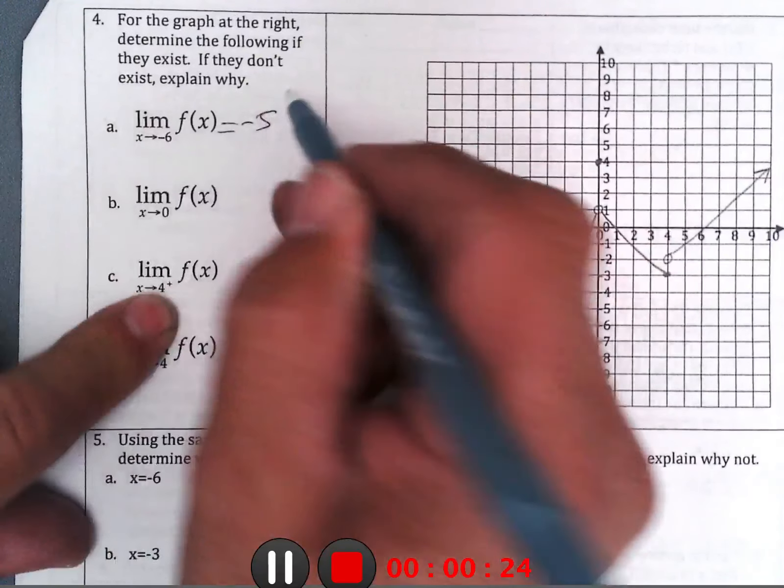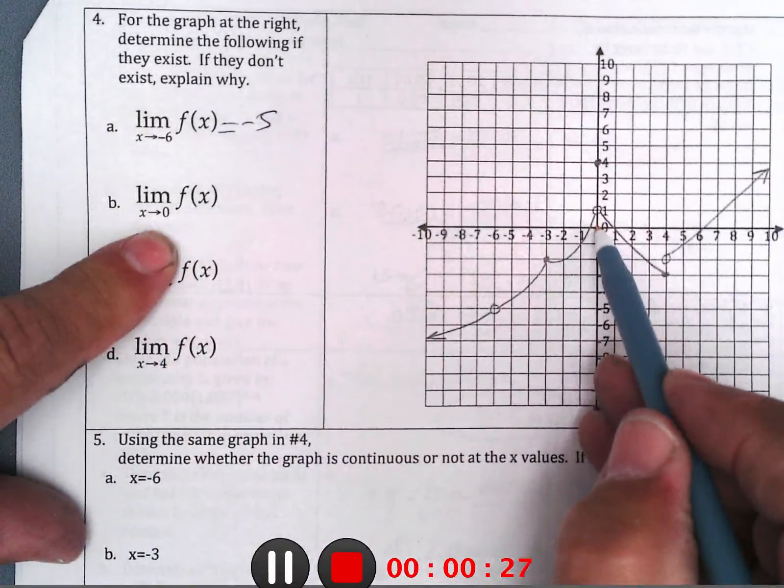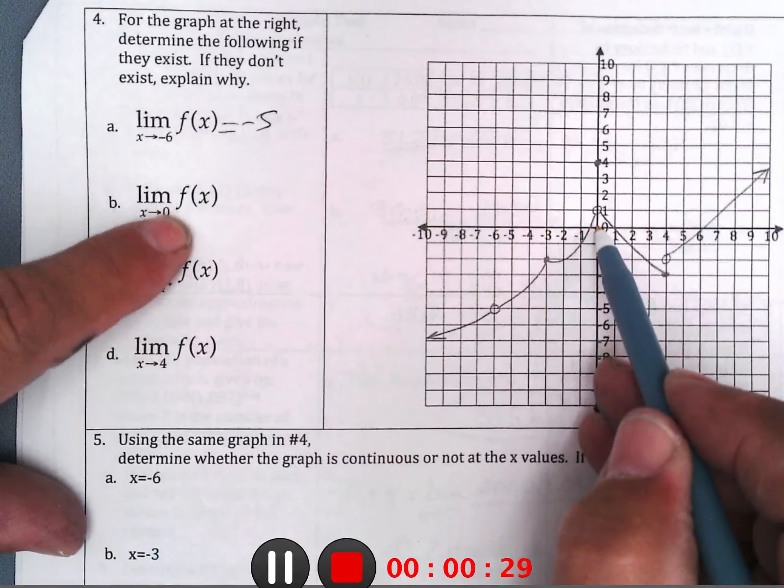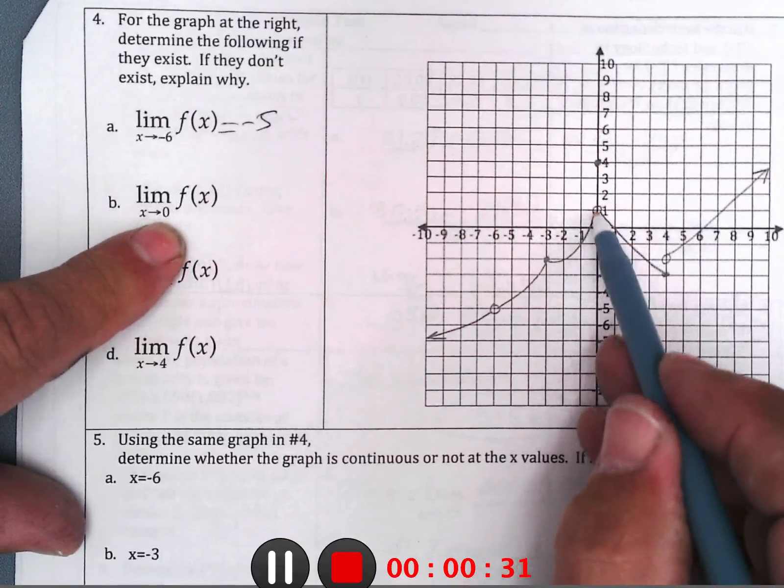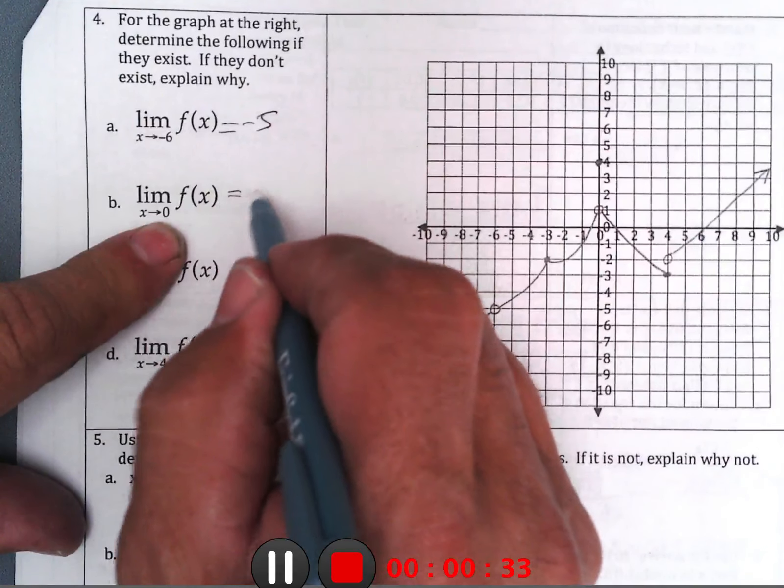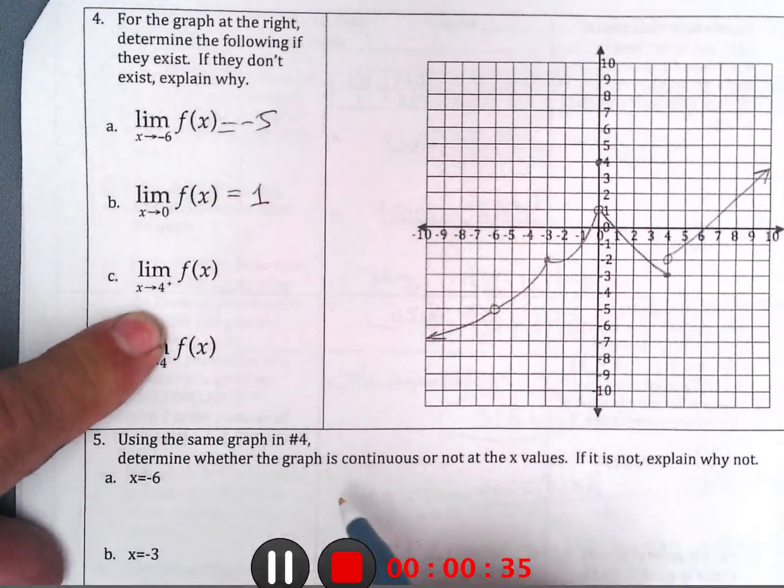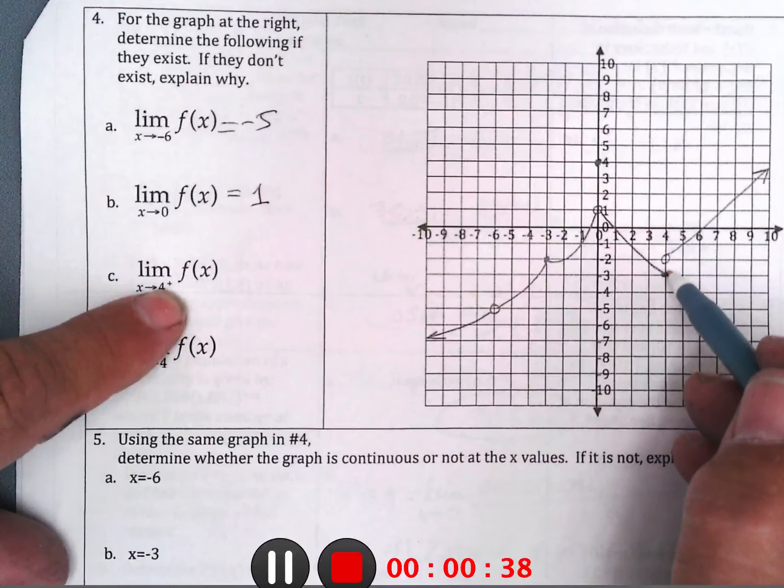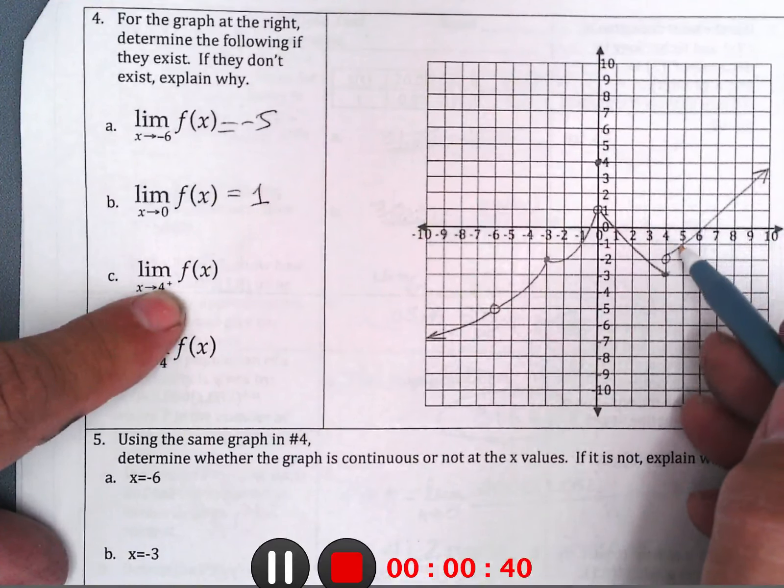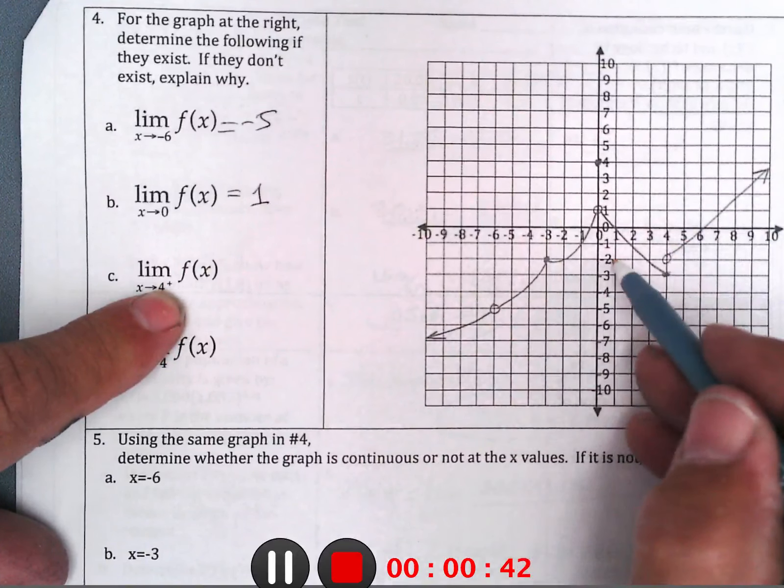If we approach 0 from both sides, it doesn't say left or right, so both sides, we get closer and closer to the height of 1. If we approach 4 from the positive side, from the right, the graph approaches a height of negative 2.